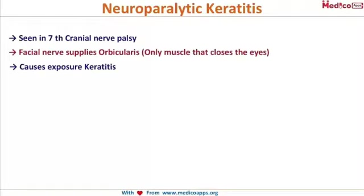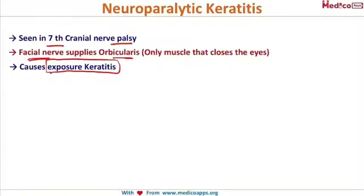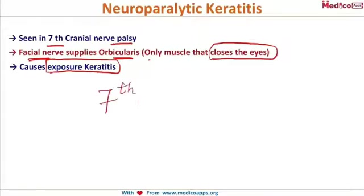There are two types of keratitis to discuss. The first is neuroparalytic keratitis, which, as the name suggests, occurs due to palsy of the seventh nerve. It is a kind of exposure keratitis — the cornea is exposed to the external environment because the facial nerve, the seventh nerve, supplies the orbicularis. The orbicularis is the only muscle that closes the eye, so when it is paralyzed, the cornea is exposed to the environment. This is termed neuroparalytic keratitis.